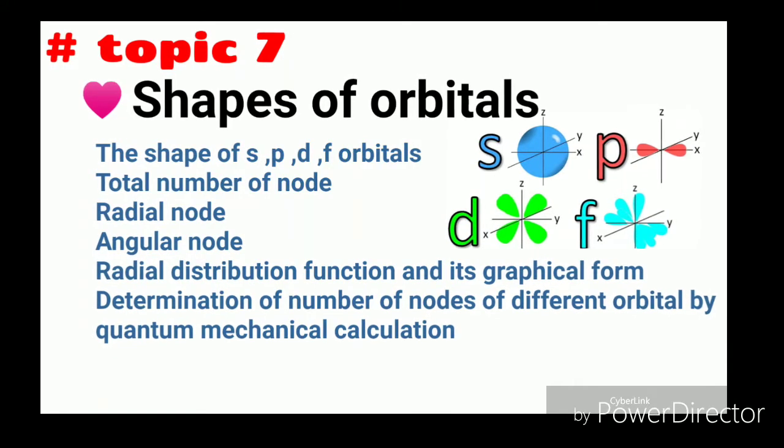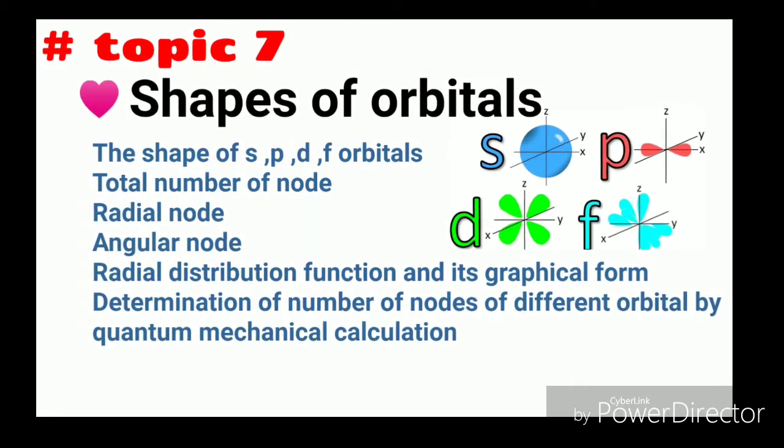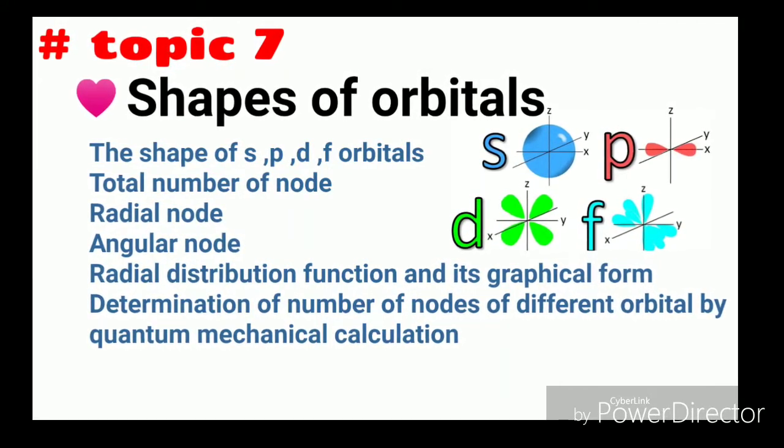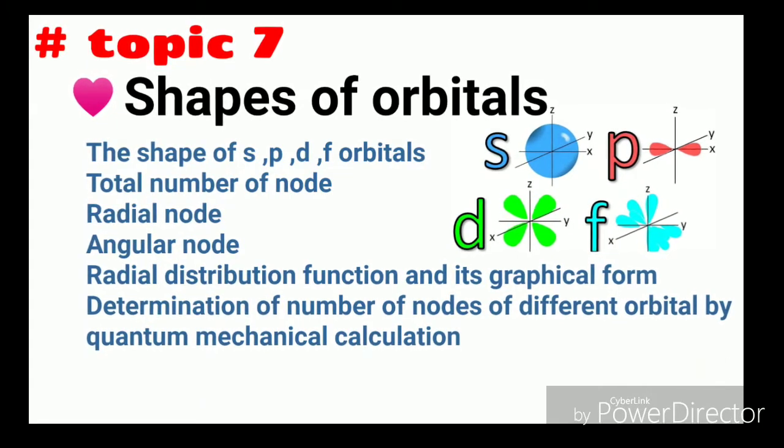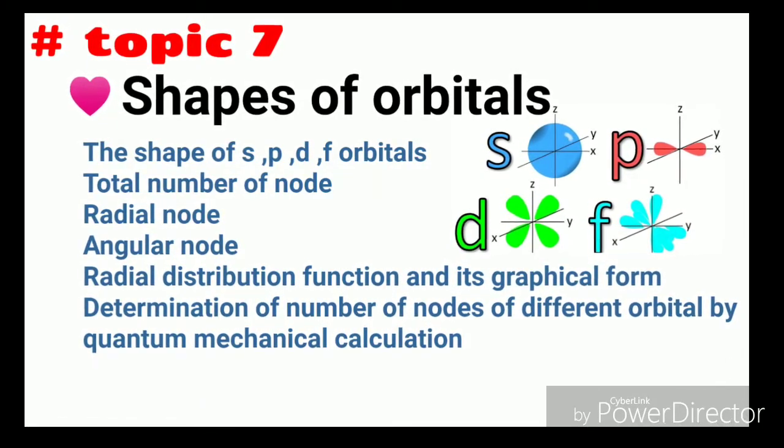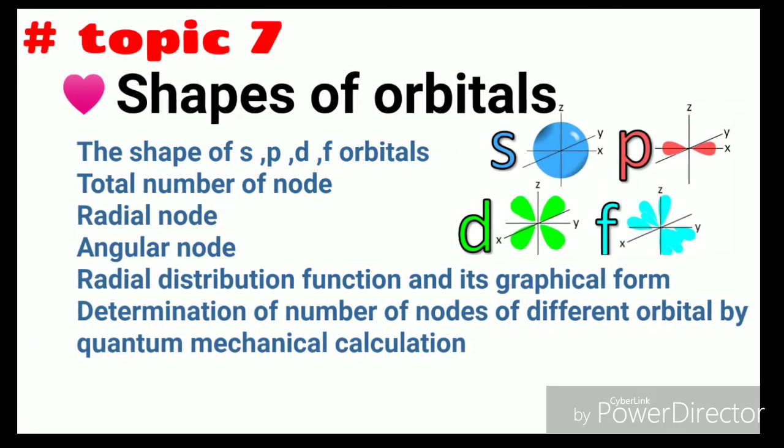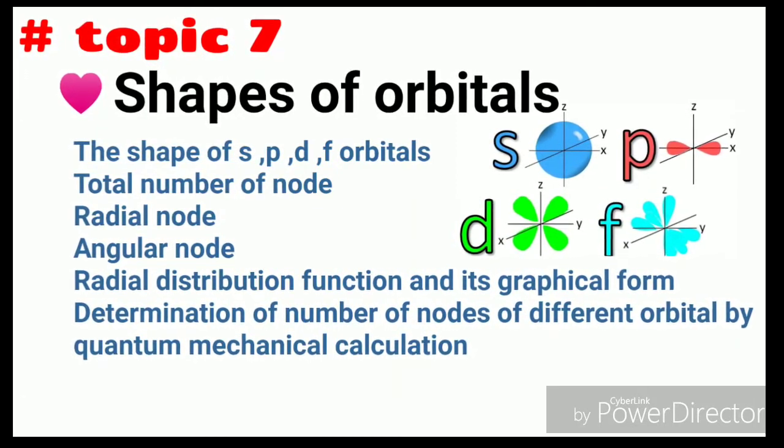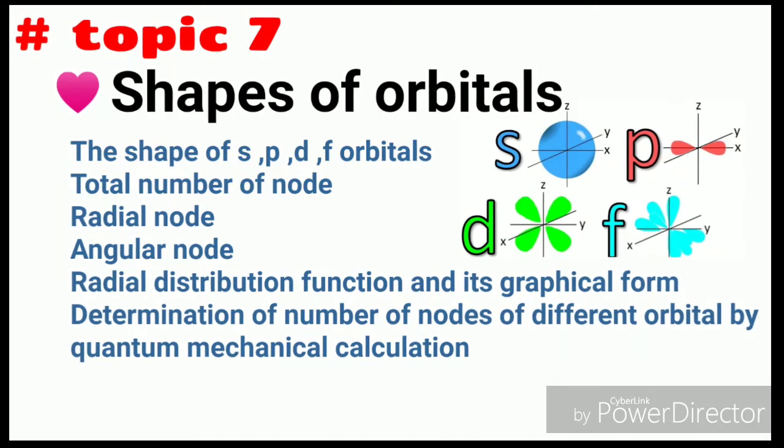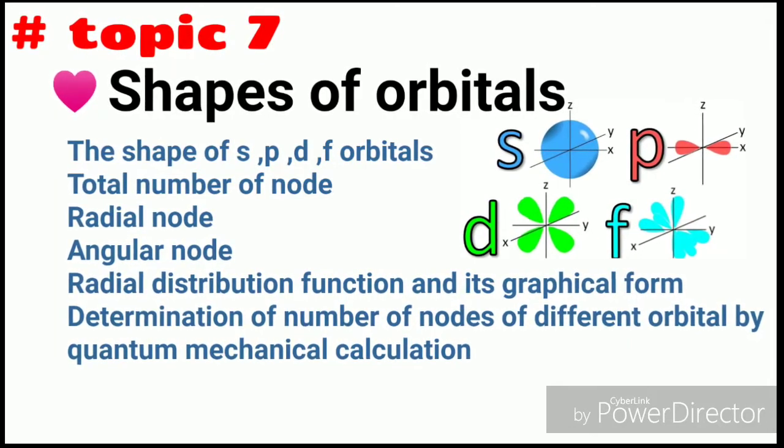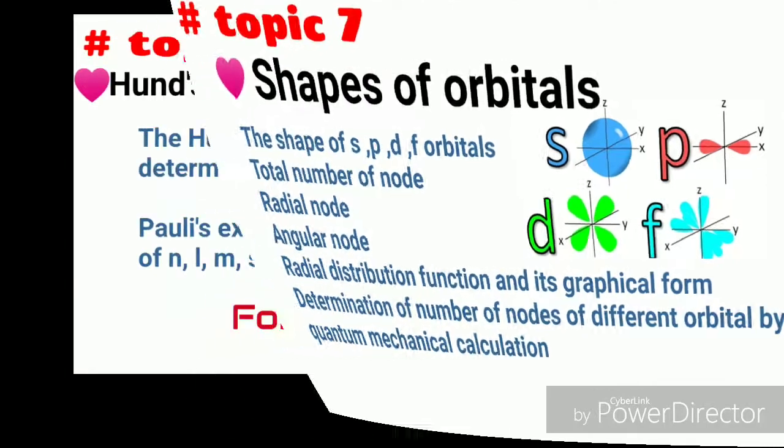The shape of s, p, d, f orbitals, the total number of nodes, total number of radial nodes, angular nodes, radial distribution function and its graphical form, and determination of number of nodes from the graph as well as from different orbitals by quantum mechanical calculation.